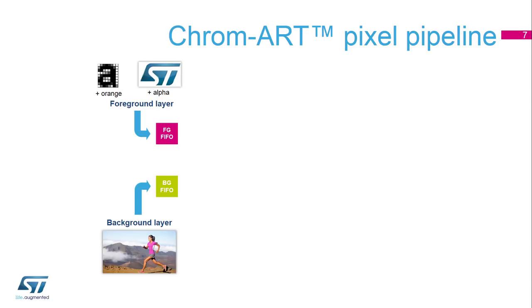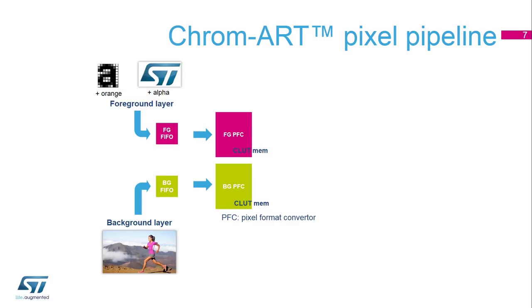Let's have a look at the Chromart pixel pipeline. The Chromart has two inputs: a background layer and a foreground layer. Here we have a simple image as the background layer, and the foreground layer is composed of an ST logo with alpha information, as well as a glyph — a bitmap representation of a font character — associated with the color orange. Foreground and background are put into their dedicated FIFOs in the Chromart, then transferred to the pixel format converter, which aligns foreground and background color depths to mix them correctly. The background layer is probably ARGB888 format, while the glyph has a more compact lookup table format, and the ST logo may be RGB565.